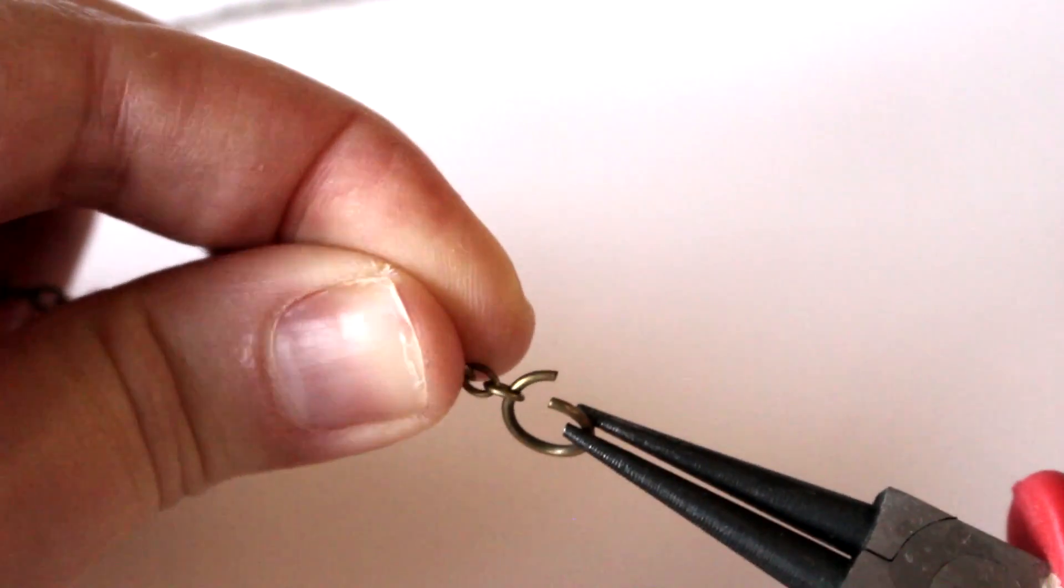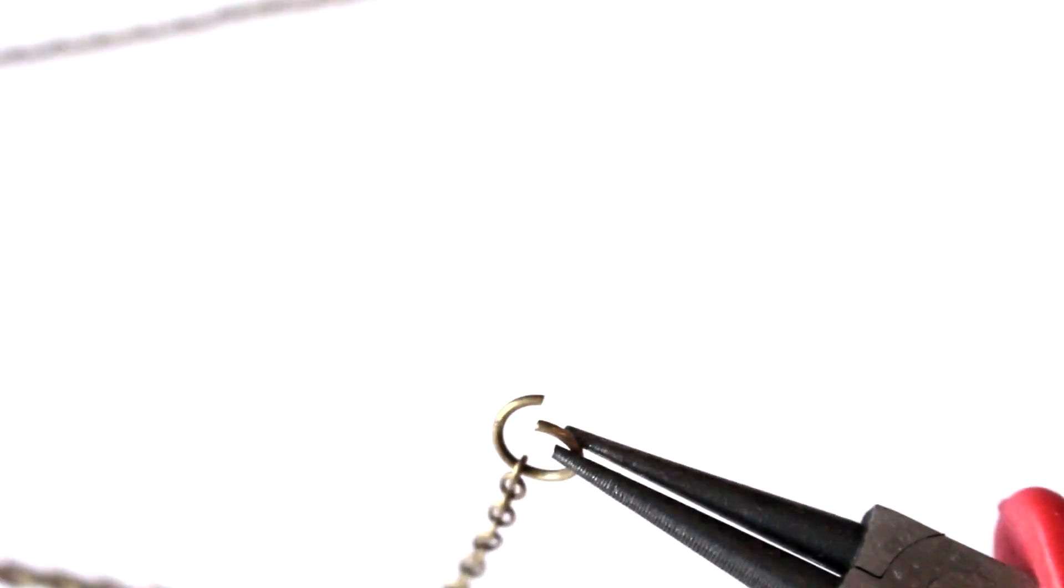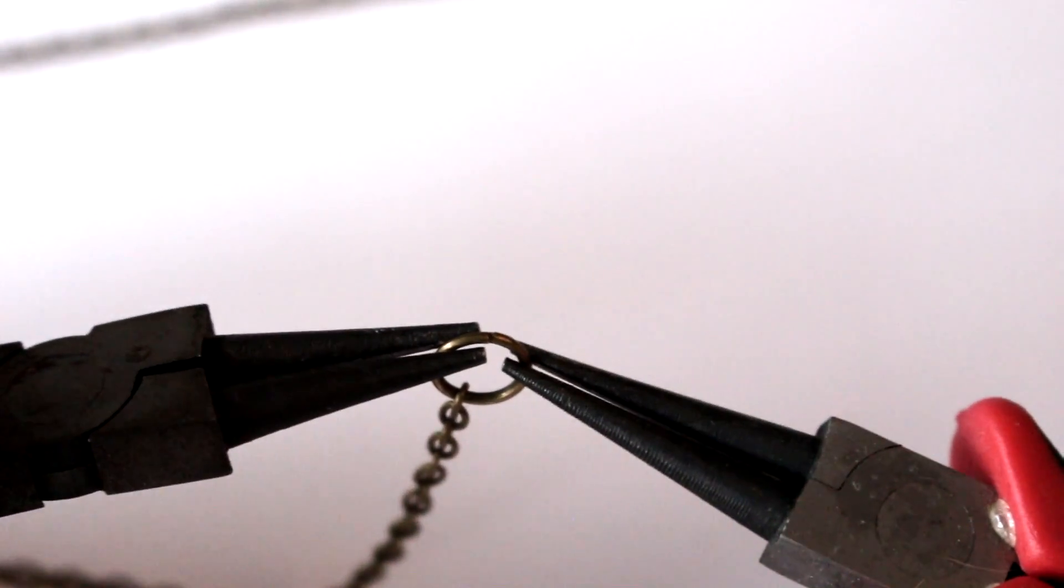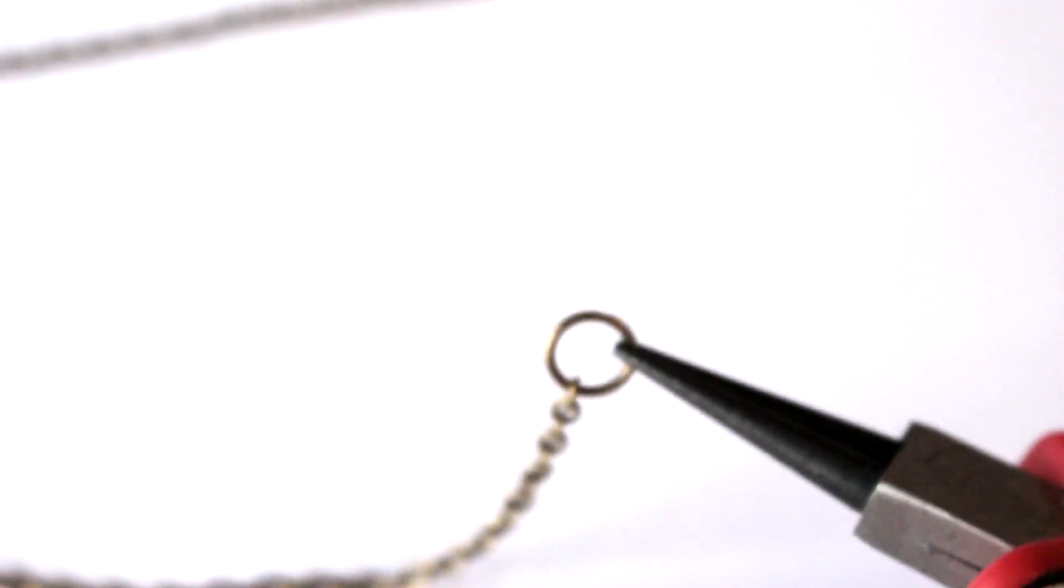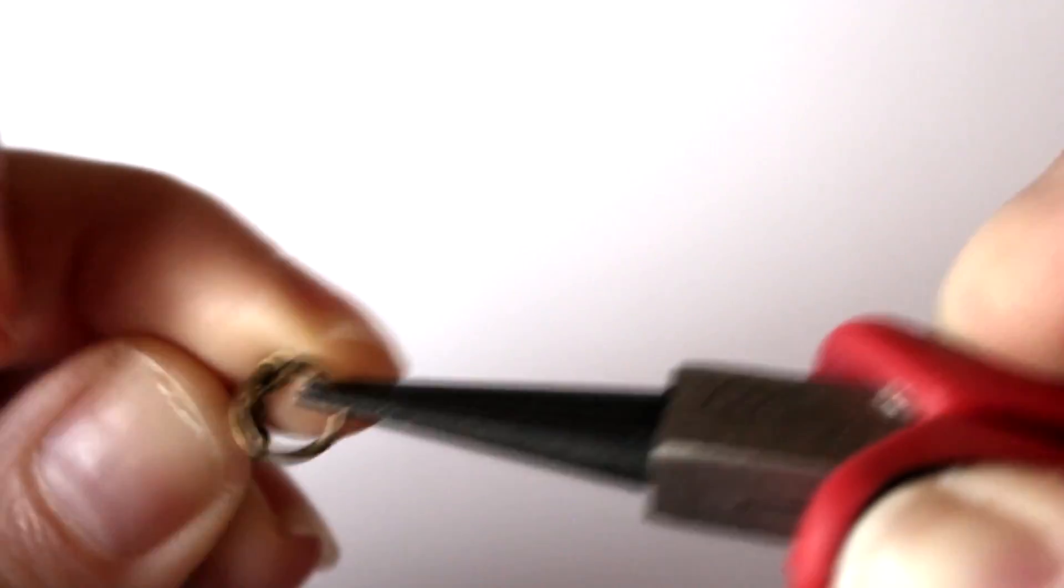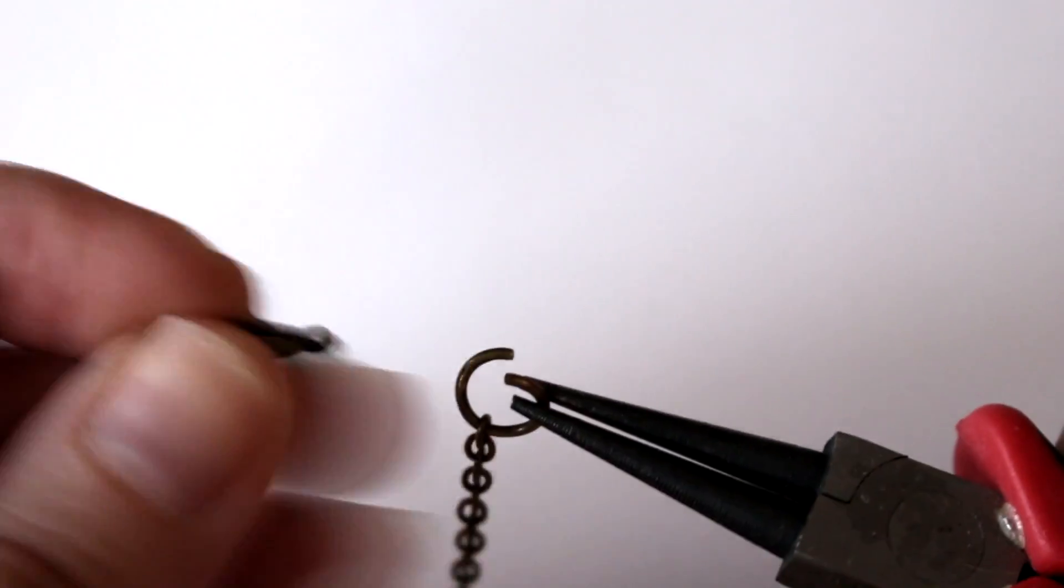Next, now that the ring is open, attach it to one end of your chain and then close the loop again. Ta-da! Repeat that step with the other end of the chain, but before you close the jump ring on this side, pop the clasp on there as well.